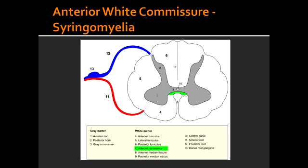What condition is syringomyelia seen with? Syringomyelia is seen with Chiari-1 malformation. One thing to note about syringomyelia is that it can expand and affect other tracts.